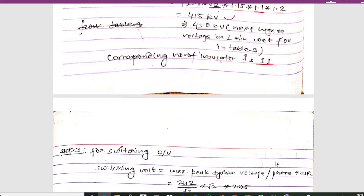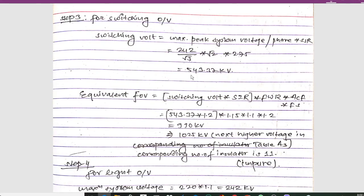For Step 3, switching overvoltage: the maximum peak switching overvoltage = (maximum system voltage / √3) × √2 × SSR. Maximum system voltage is 242 kV, divided by √3 for phase voltage, multiplied by √2 for peak, and multiplied by SSR = 2.75.